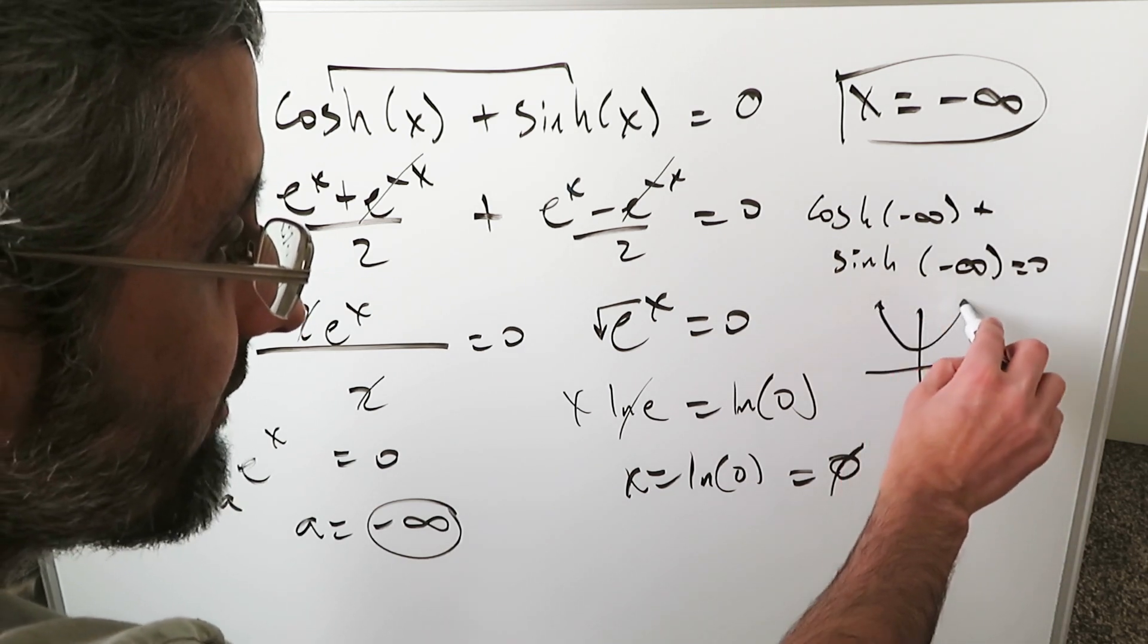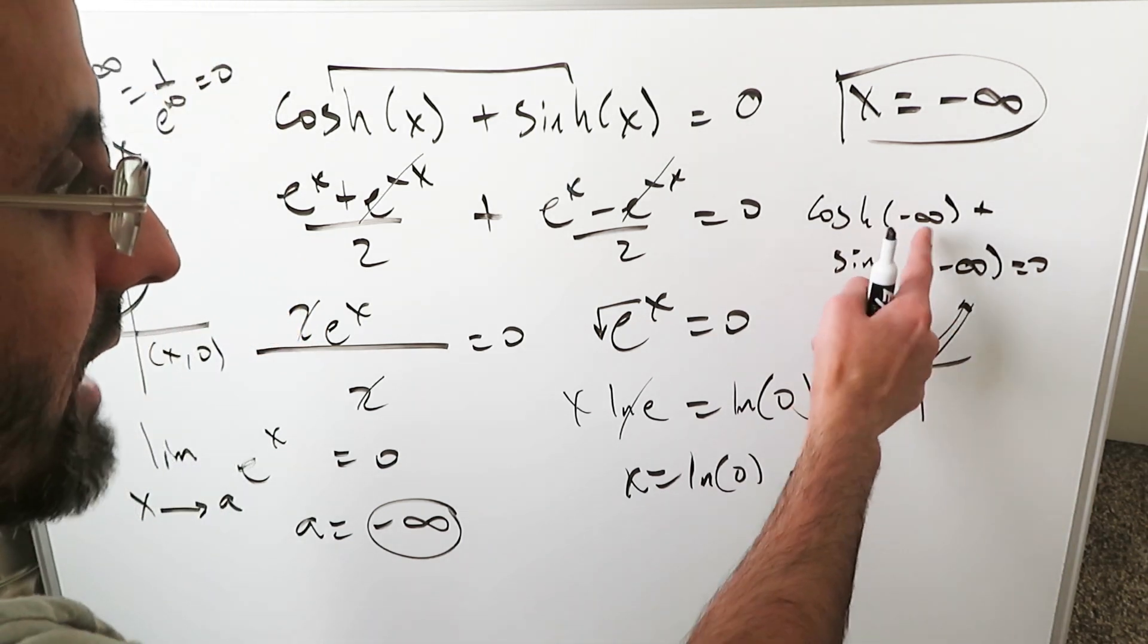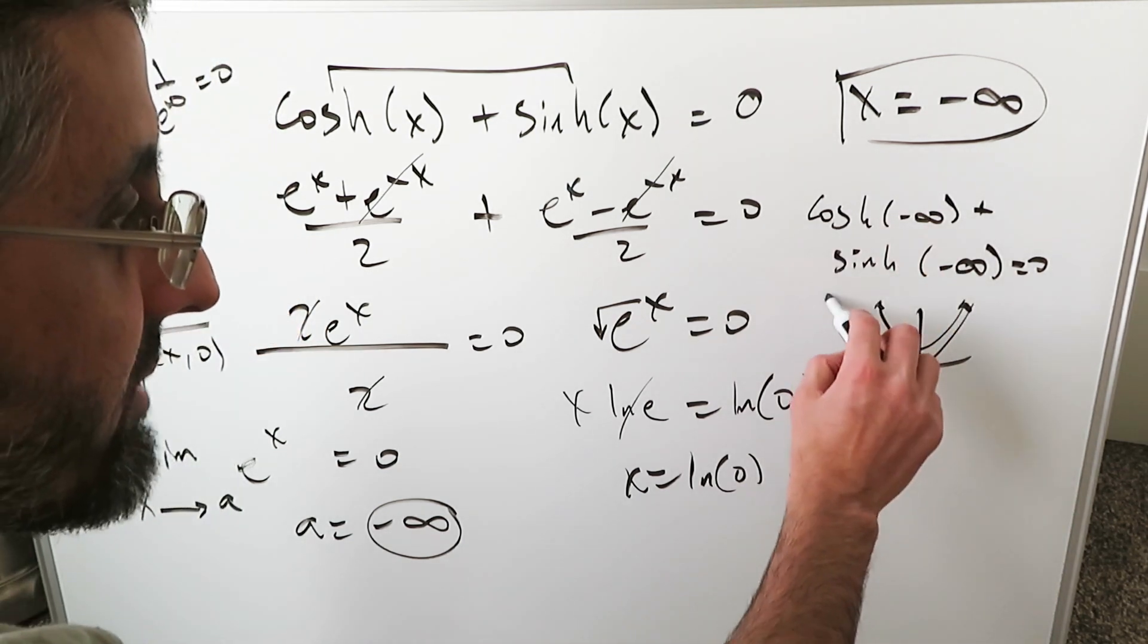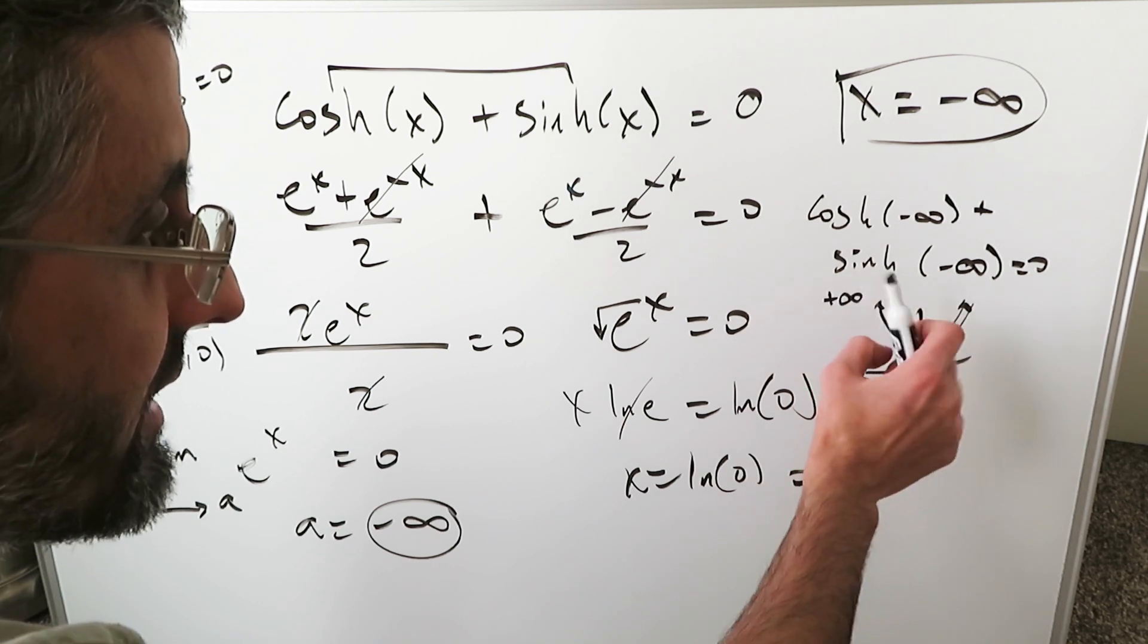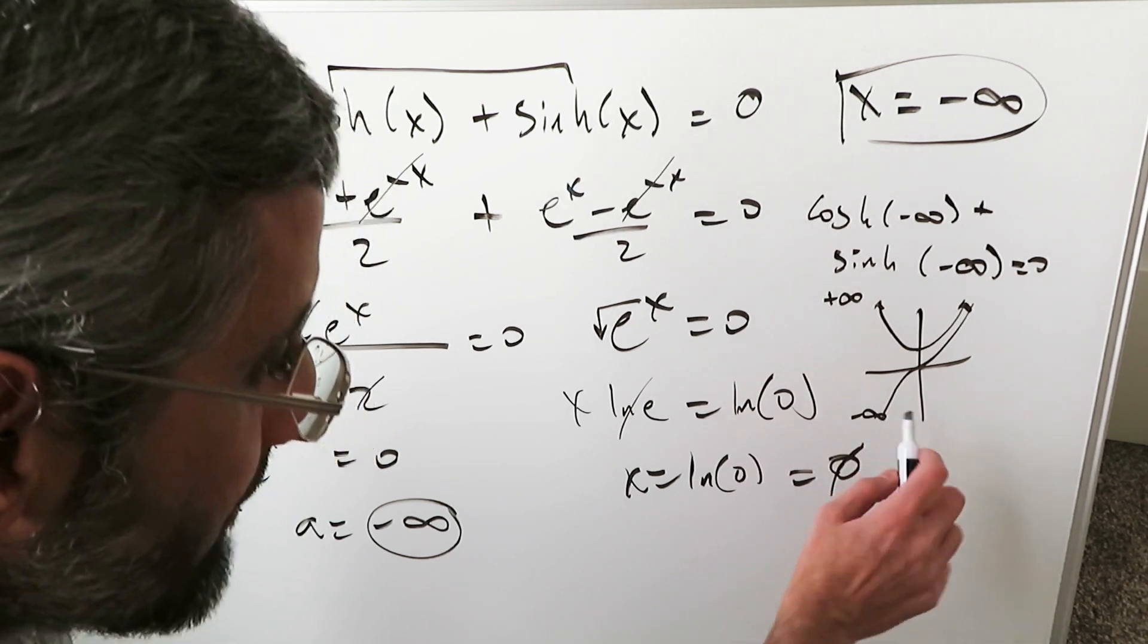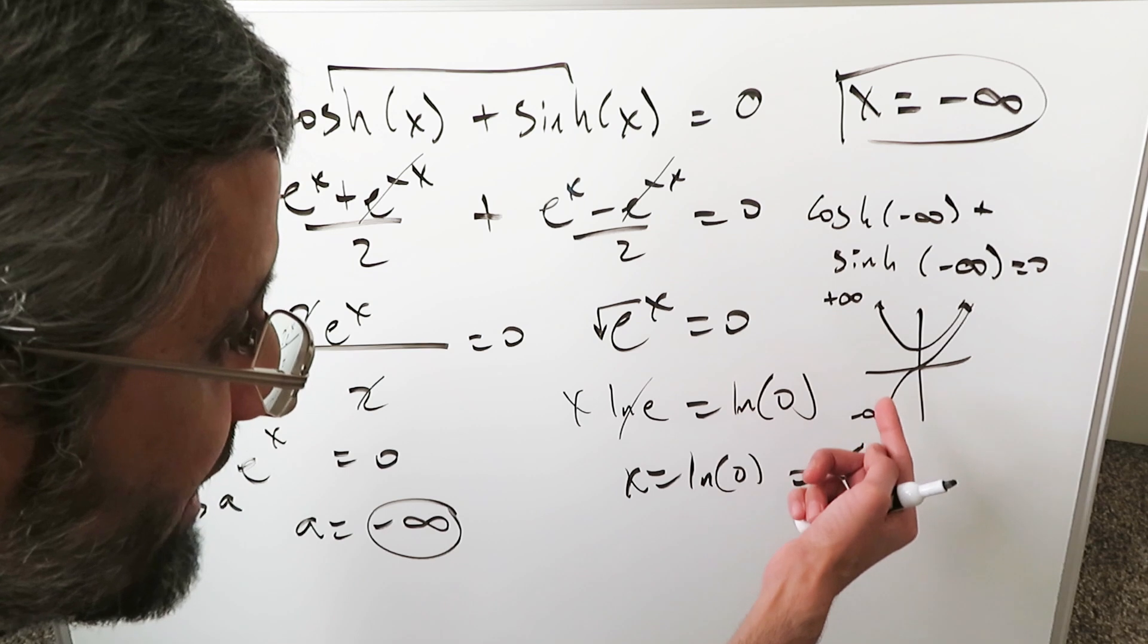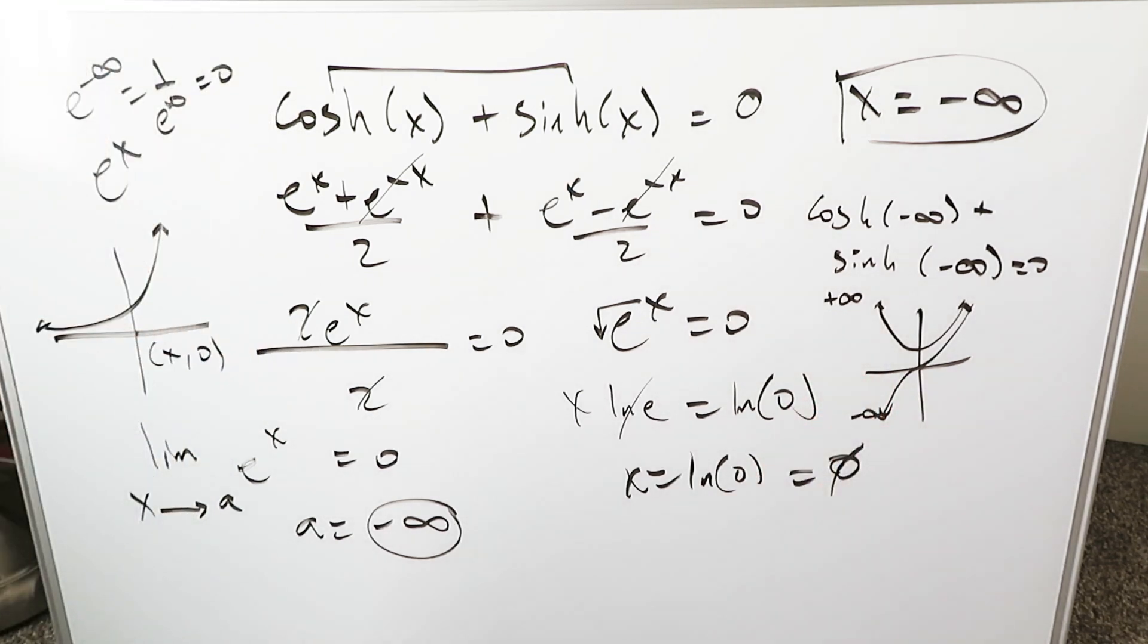The hyperbolic cosine is a graph like this. The hyperbolic sine is a graph like this. As hyperbolic cosine has minus infinity placed in it, it approaches positive infinity. As hyperbolic sine has minus infinity placed in it, you have minus infinity come out because your function is approaching minus infinity. You add positive and minus infinity, you net them out, you'll get 0.